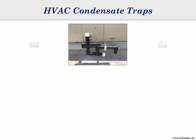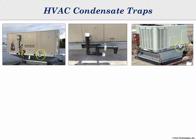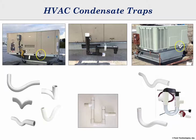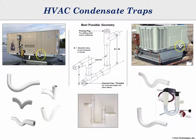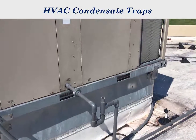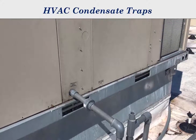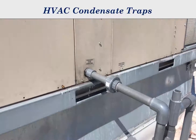Condensate traps for HVAC drain systems in all shapes and sizes are available from supply houses and field fabricators, with little or no knowledge of pressure conditions and condensate flow rates. This chart shows some of the types of traps available. Some are more prone to failure than others, but all, including the best possible geometry, are subject to failure as a result of frequent empty operation or flow blockage. Building owners and HVAC contractors contend with trap maintenance on a regular basis.